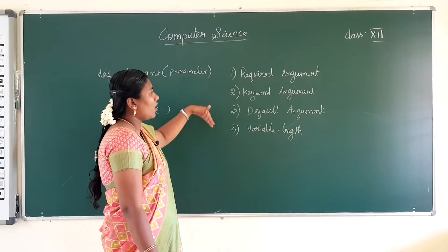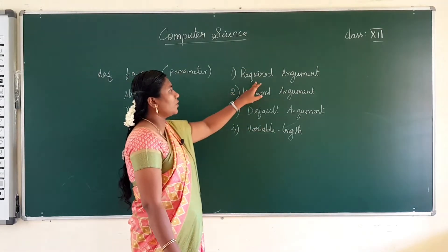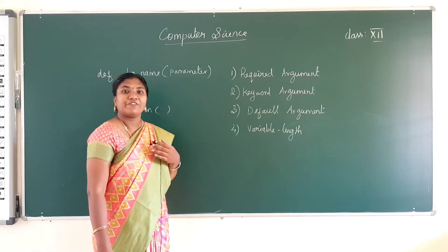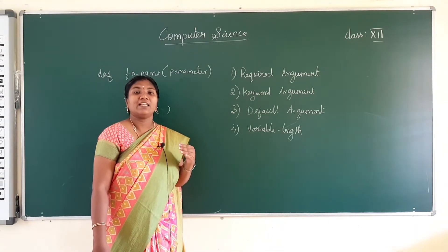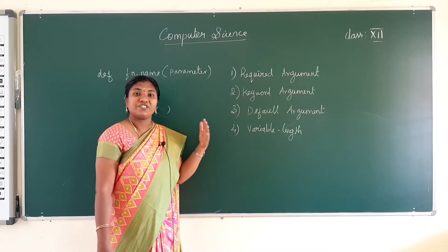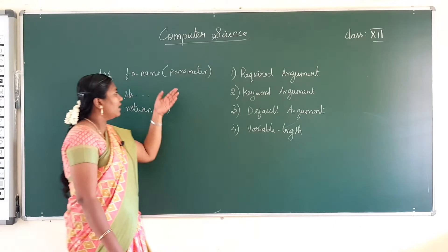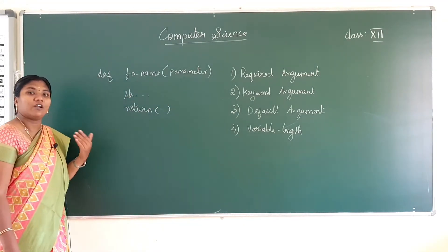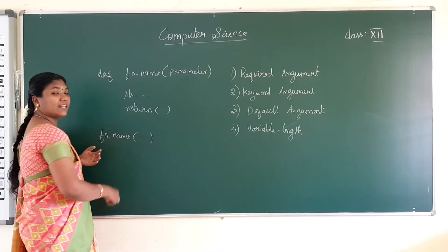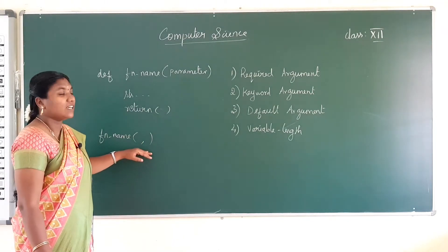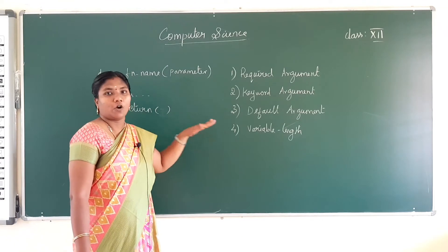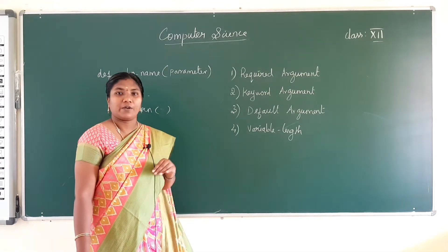If we are giving a parameter in the function definition and it has one or two parameters, then the order in which we give the parameters — in that same order we should give the values in the function call. In required argument, we have to give the values to the parameters in the correct specified order.